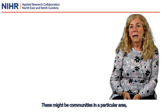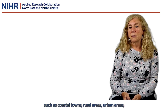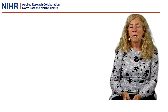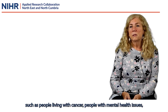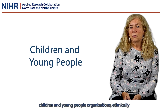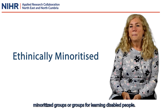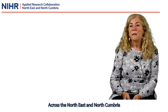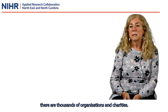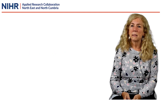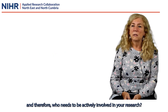These might be communities in a particular area such as coastal towns, rural areas, urban areas, or in specific parts of the region such as West Cumbria or Teesside. Some organisations work with specific groups such as people with cancer, people with mental health issues, children and young people's organisations, ethnically minoritised groups, or groups run by and for disabled people. Across the North East and North Cumbria there are thousands of organisations and charities, so think about who your target audience is and therefore who needs to be actively involved in your research.